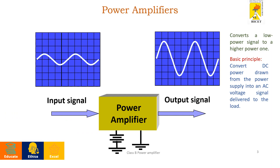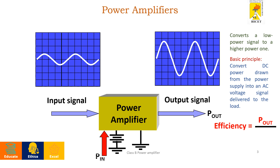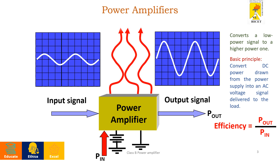First, what is meant by power amplifier? A power amplifier converts a low power signal into a high voltage, high power signal. It takes DC power from the supply and converts it into an AC signal which is delivered to the load. The efficiency of it is given by P out divided by P in.